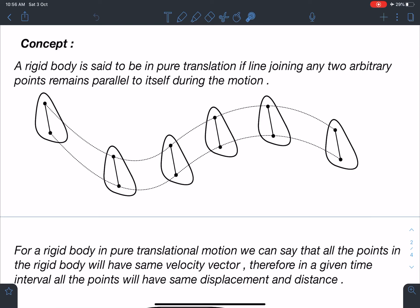If the line joining any two arbitrary points on the body remains parallel to itself during the motion. So you can see here I have taken a rigid body and randomly I'm choosing two points here.